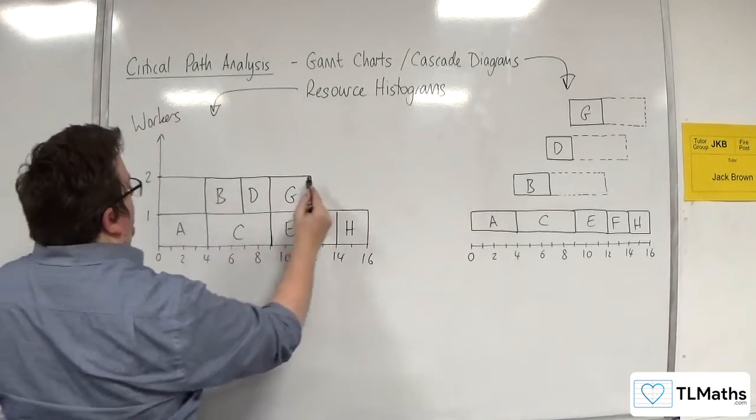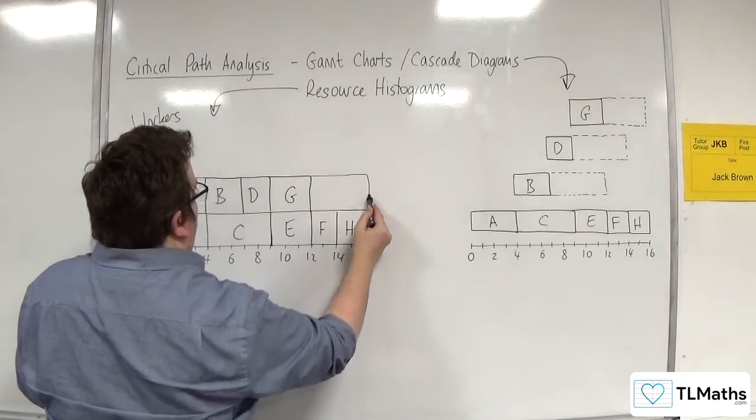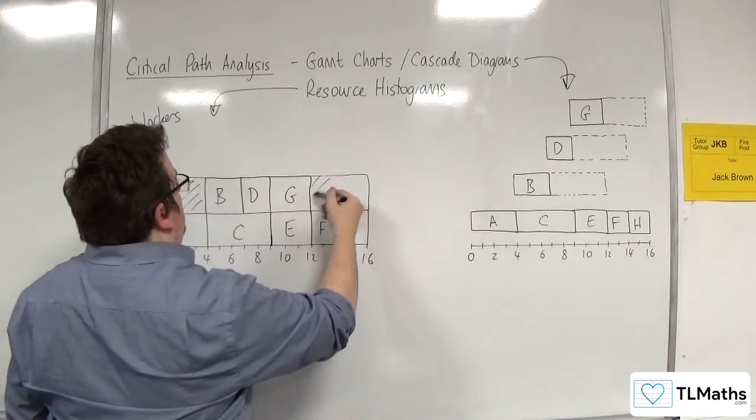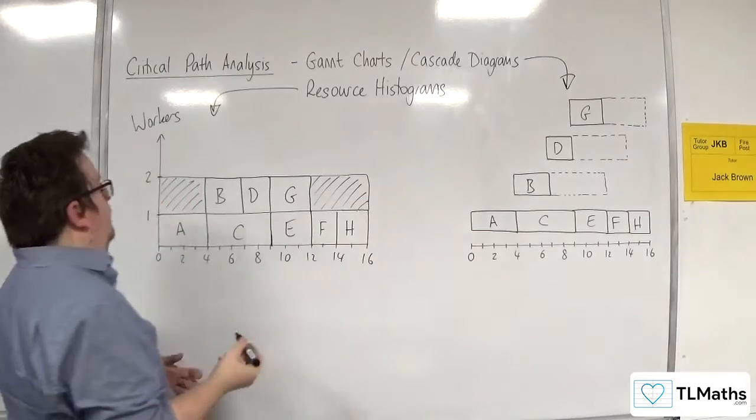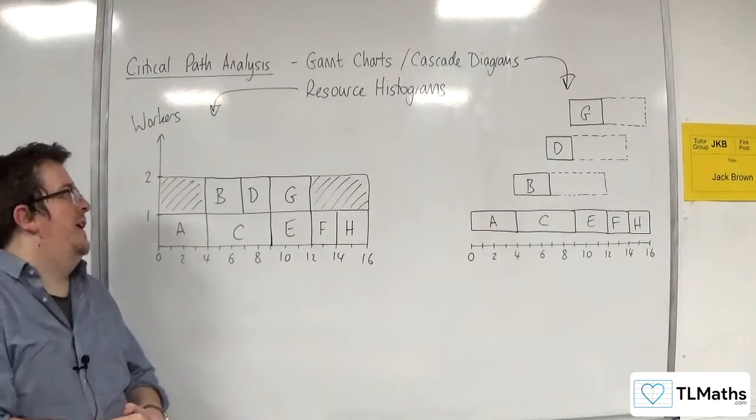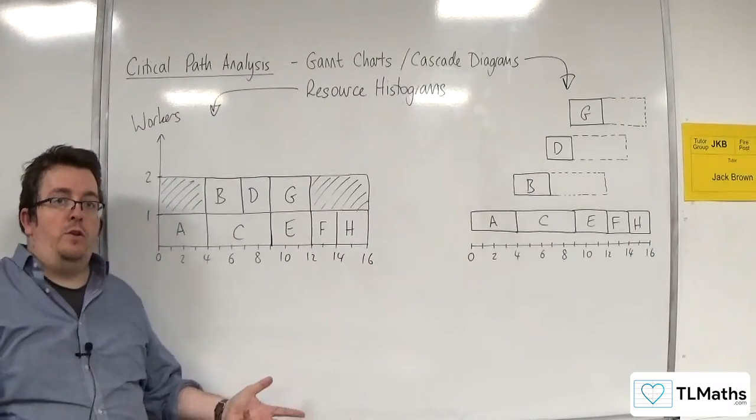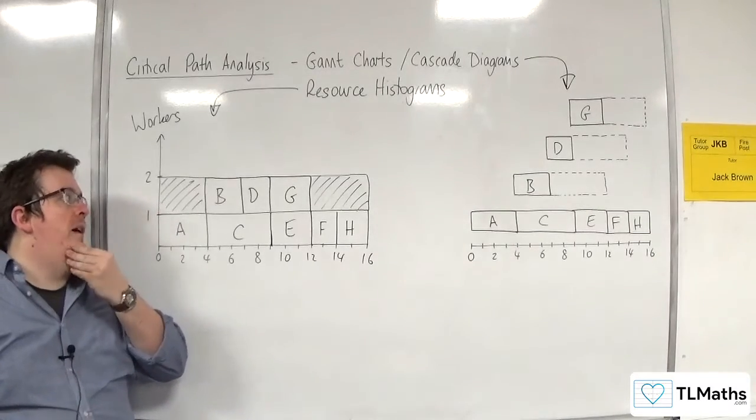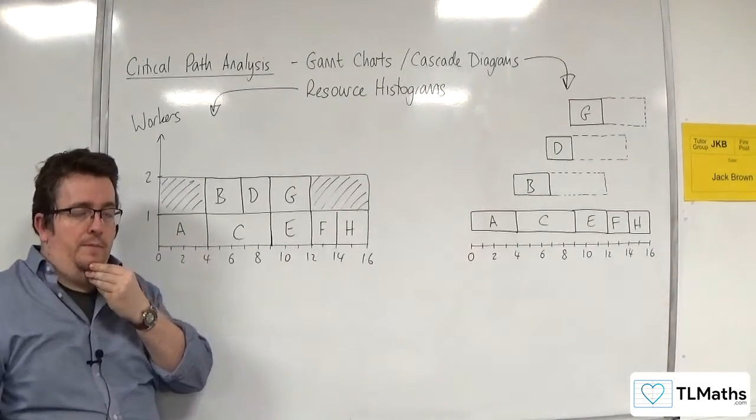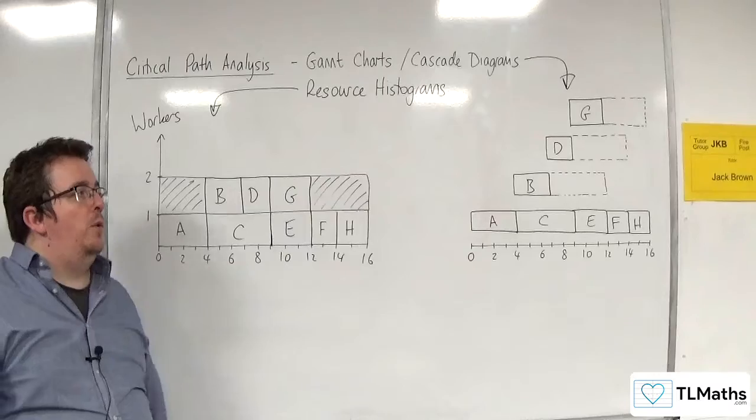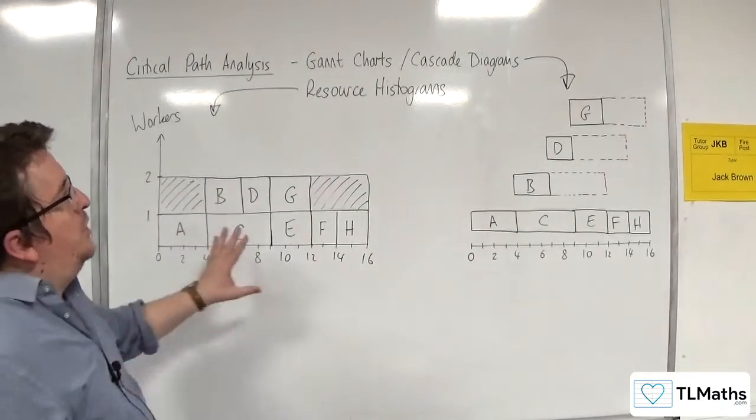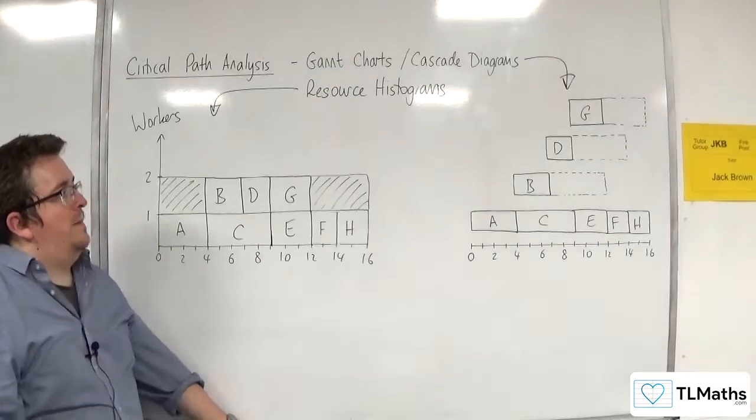So this time that we've got here, that worker is not being used. Now, follow the directions that the exam paper gives you. It might ask you to shade those regions out, or it might just ask you to leave them blank. Really depends on what the exam question is asking. So this is the resource histogram that goes with this cascade diagram.